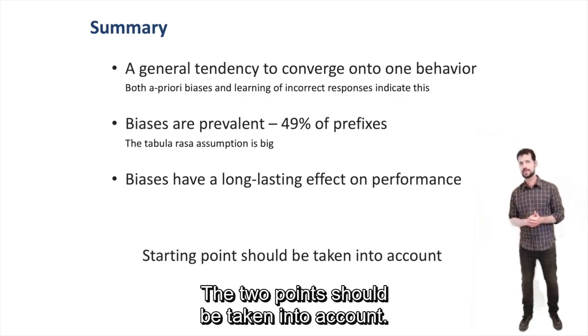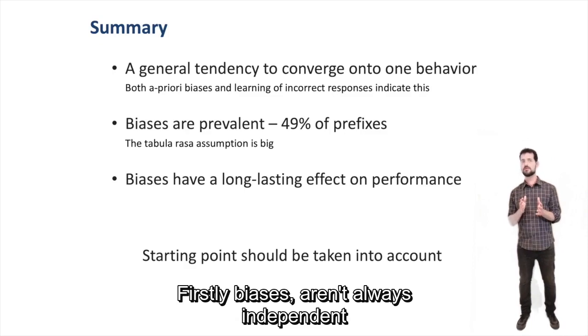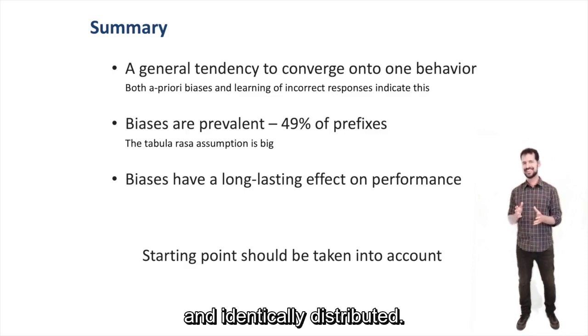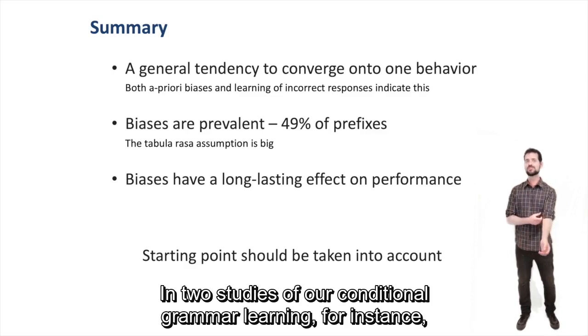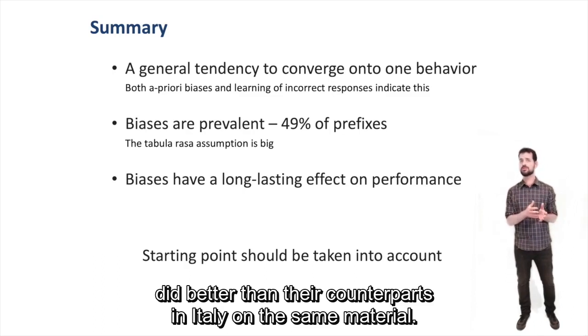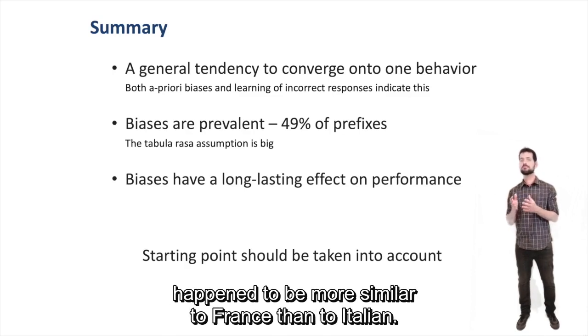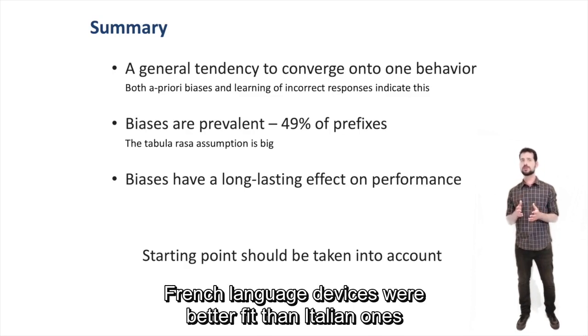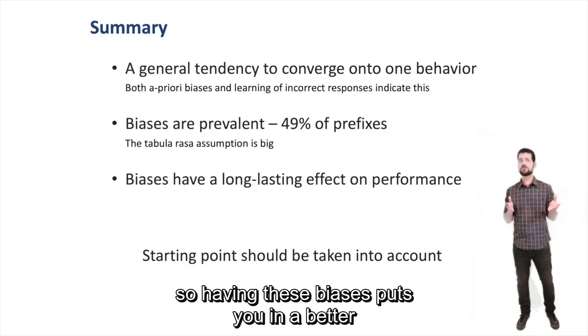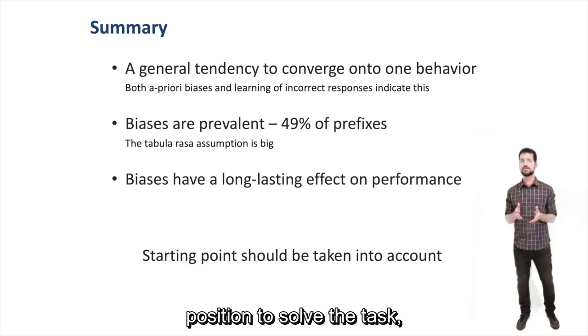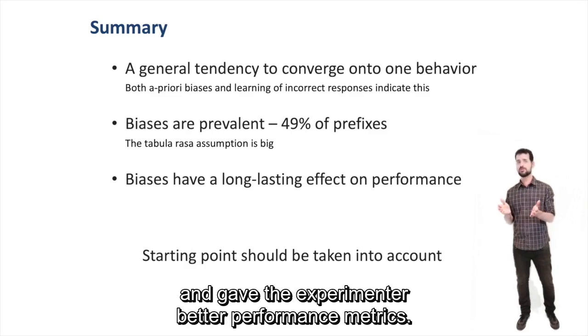In two studies of artificial grammar learning, for instance, it was found that participants in France did better than their counterparts in Italy on the same material. It was found that the artificial language they used happened to be more similar to French than to Italian. French language biases were better fit than Italian ones, so having these biases put you in a better a priori position to solve the task and gave the experimenter better performance metrics.